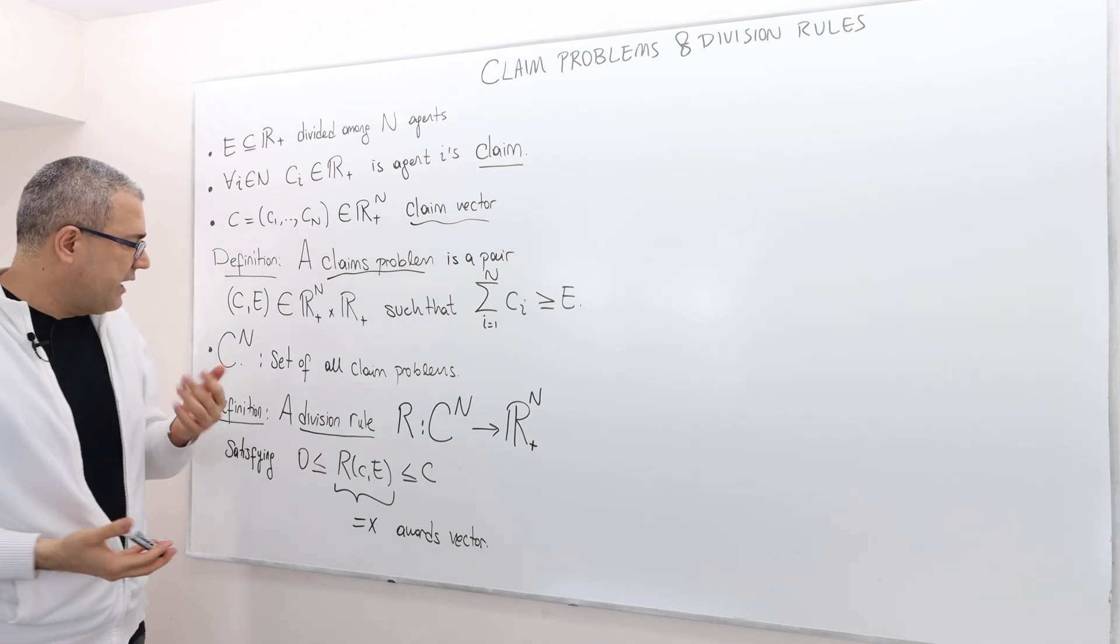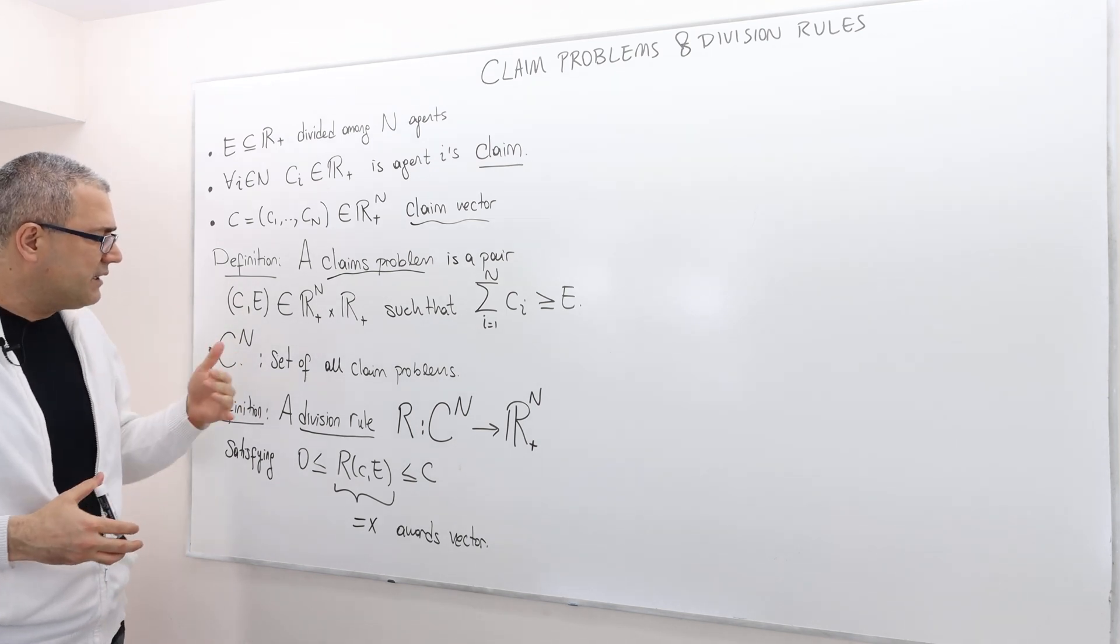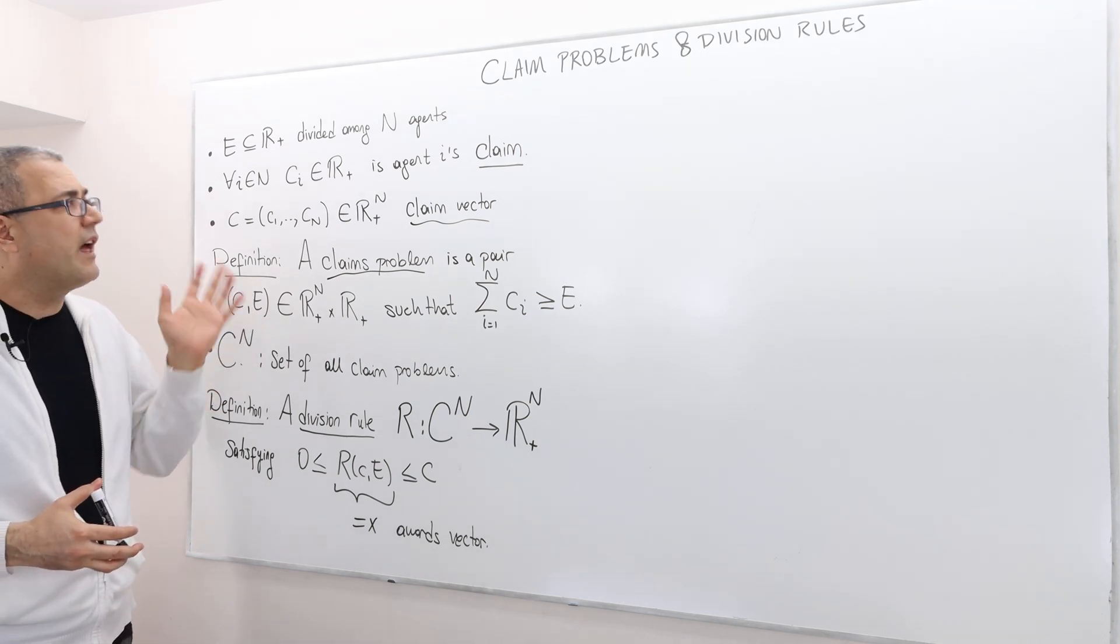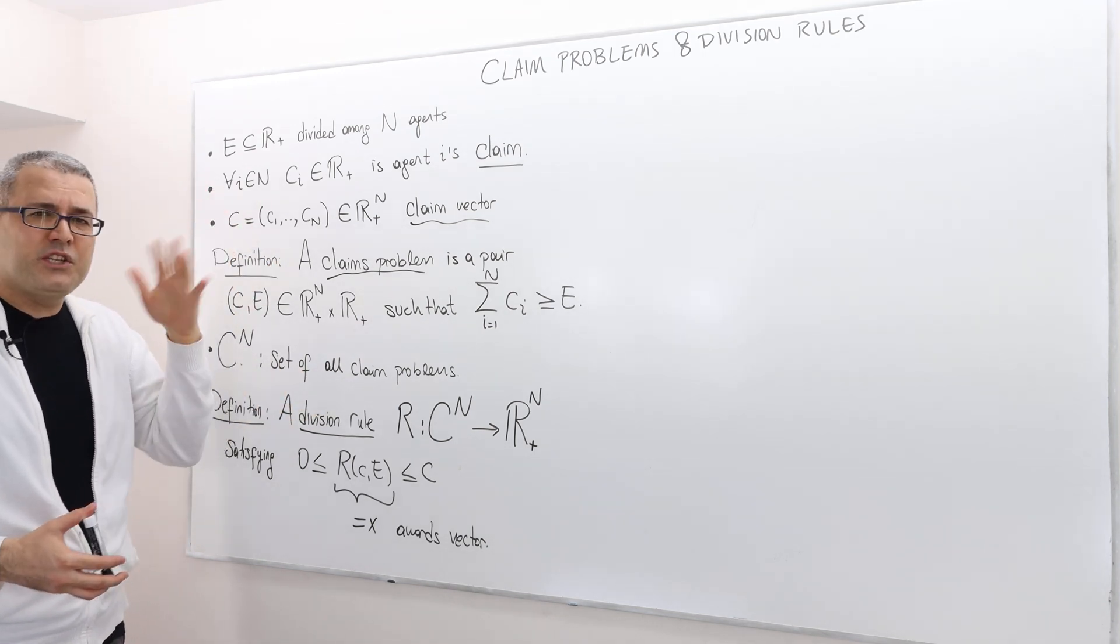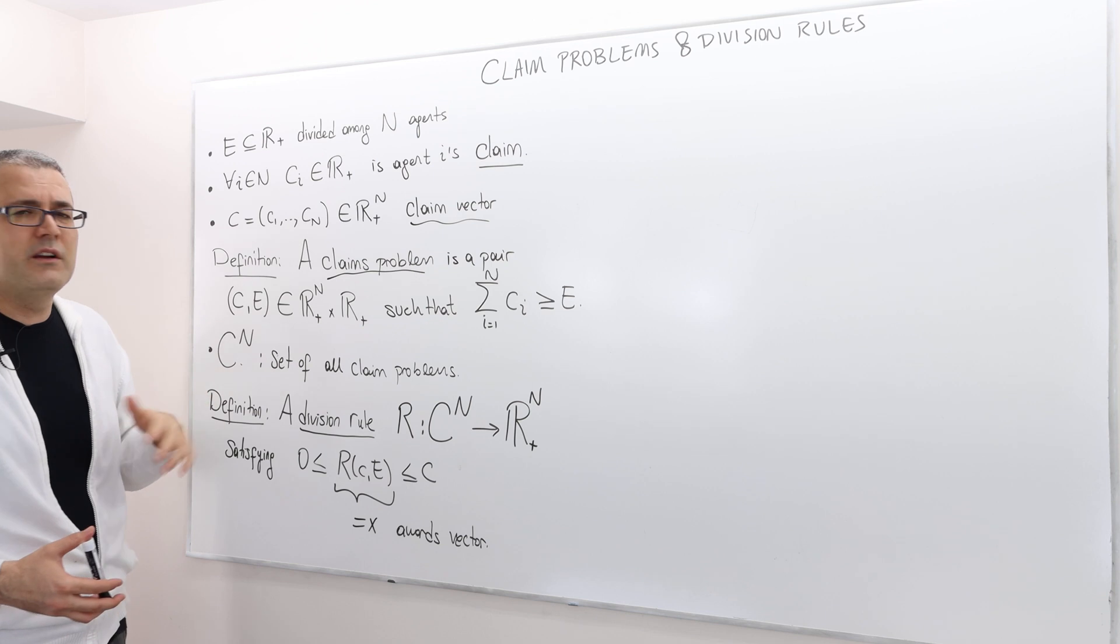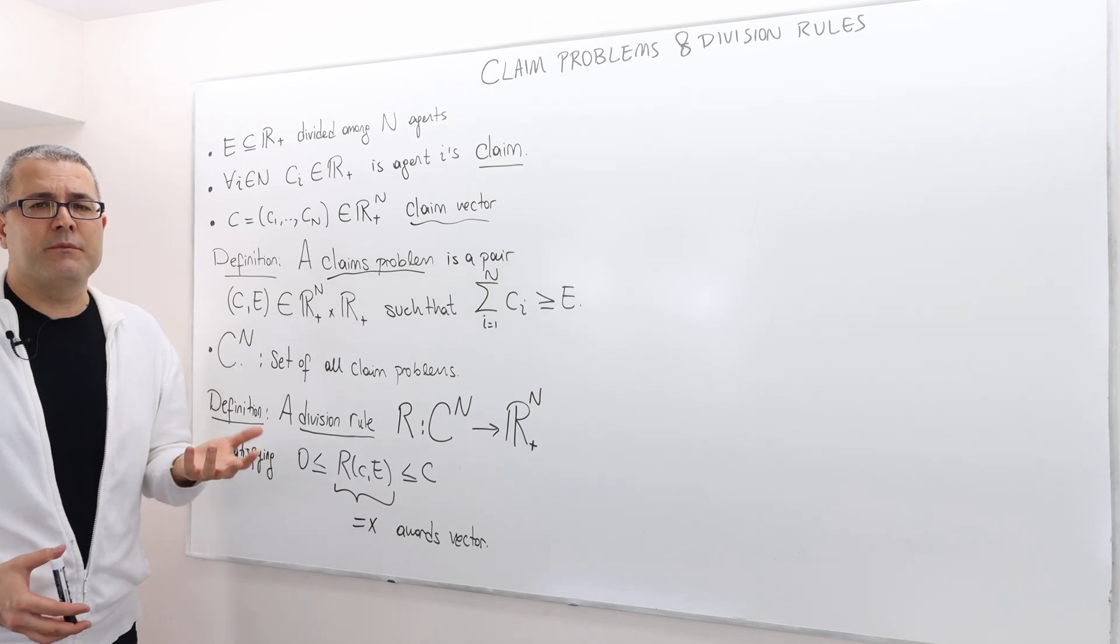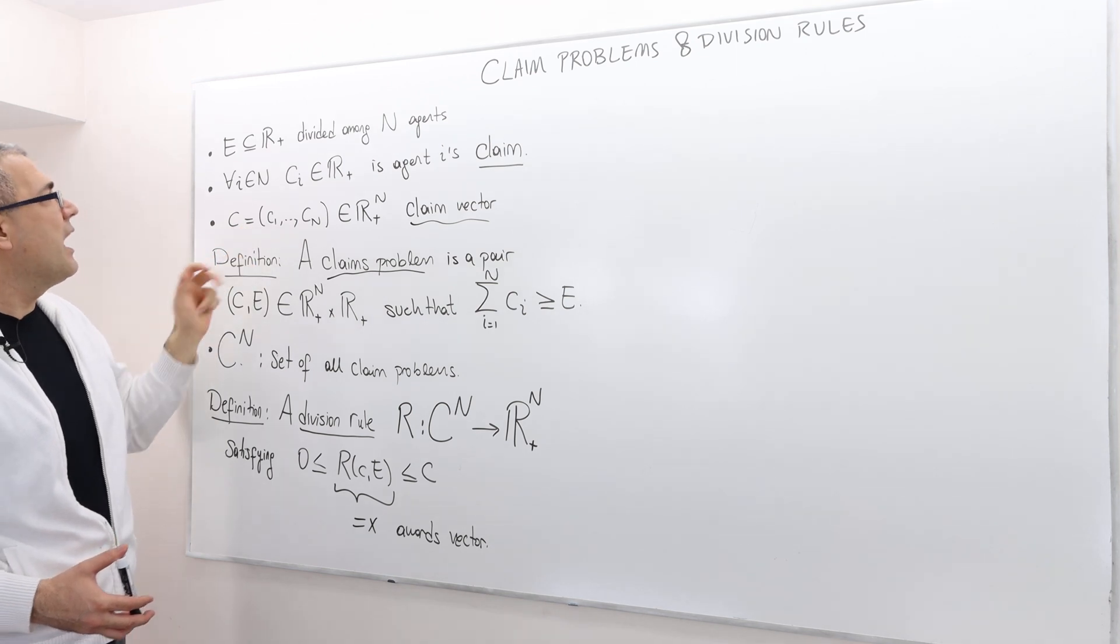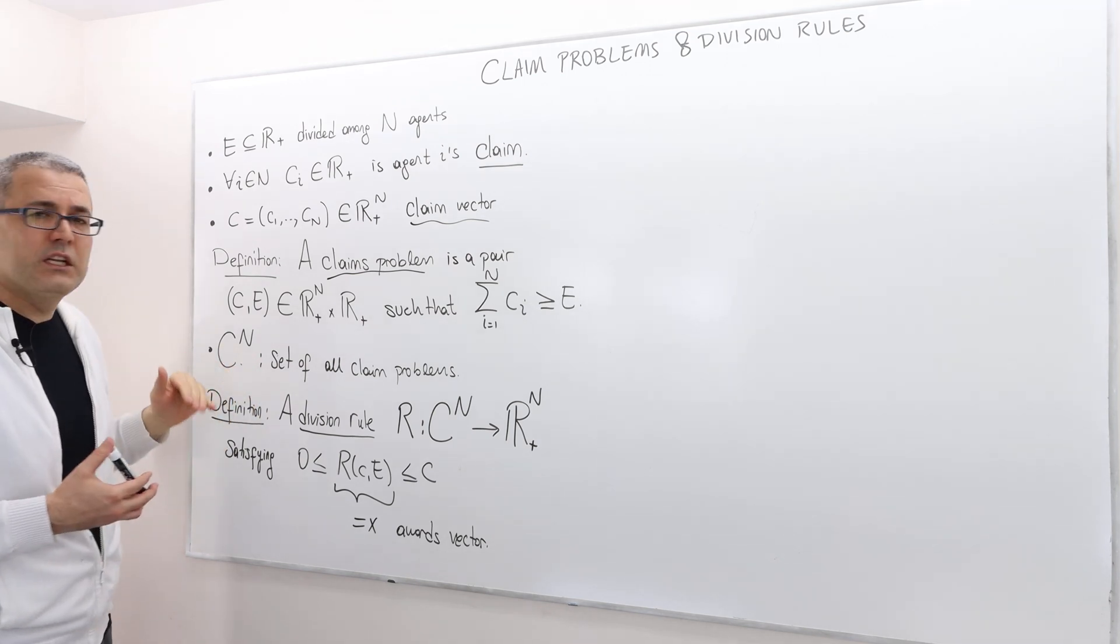We are going to use this notation. This is a capital C to the power N. It's just a notation. It basically denotes the set of all claims problems you can think of, with N agents. Depending on, as you change E, obviously, you're going to get another claims problem. As you change the C vector, the claim vector, you're going to get another claims problem. So you can create infinitely many claims problems by changing the set of agents and the claim vector and, obviously, the surplus. So all those claims problems are included in this set.